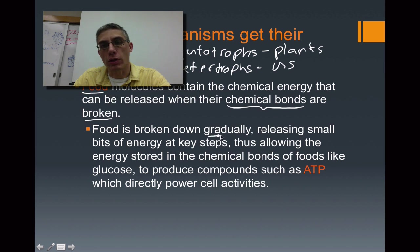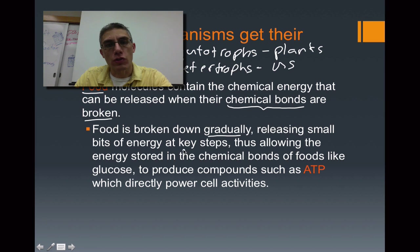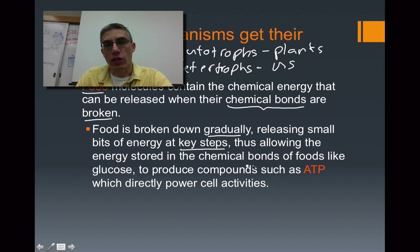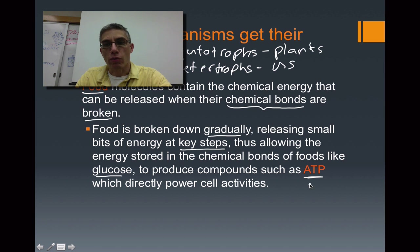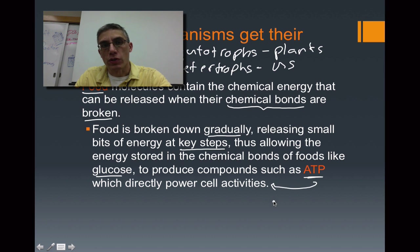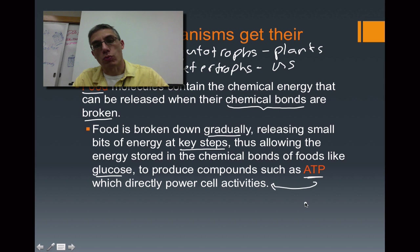This food has to be broken down gradually, releasing very small bits of energy at key steps within the process of cell respiration. This allows the energy stored in the chemical bonds of foods, like glucose, to produce compounds such as ATP — which we discussed back in Chapter 8. Remember, this ATP is going to be used to power all of the life processes that occur within the cell. So this food is really important to produce the energy we need to remain alive.